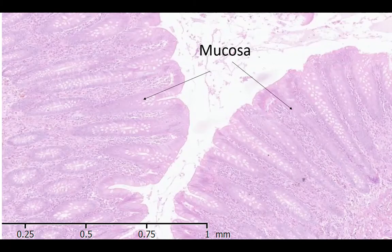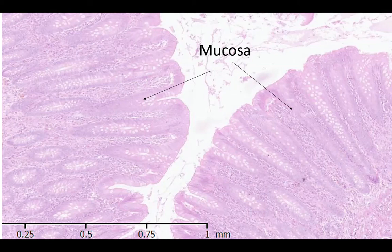Now we are looking at the high-power view of the mucosa, which is the most inner lining of the appendix. This inner lining of the appendix is covered by granular epithelium, which is an intestinal-type epithelium with colonel cells and goblet cells. As you can see with the arrow on the screen, it is pointing to the abundance of lymphoid tissue, which is located inside of the mucosa.